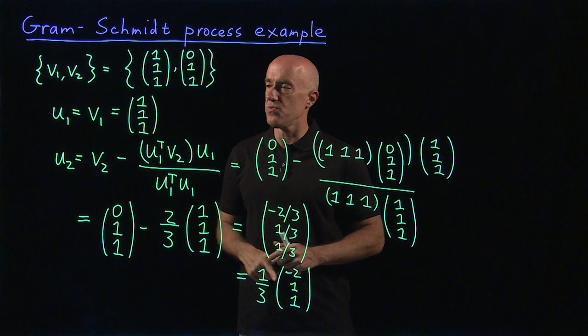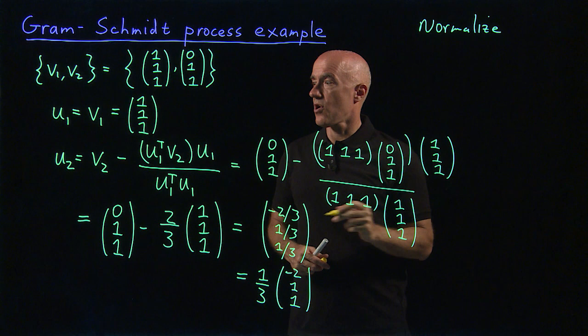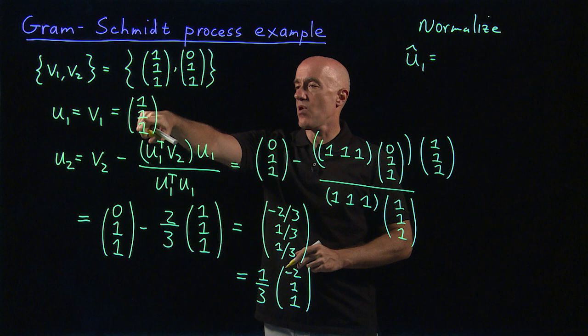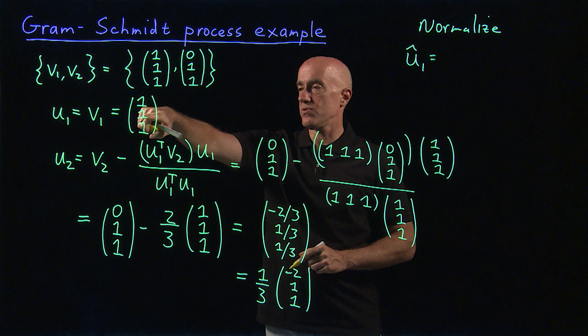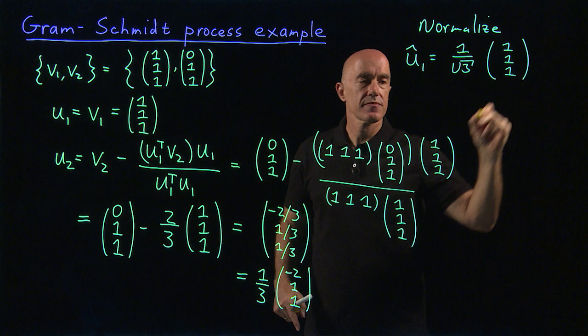And we can normalize. So now finally we normalize. Our U1 hat becomes (1,1,1). And then we divide through by the norm of (1,1,1), which is this vector transpose times itself is 3. And then we take the square root, so 1 over root 3. So the normalization is 1 over root 3 times (1,1,1).